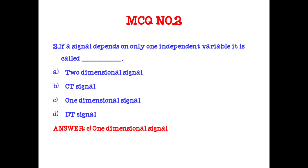More than three independent variables gives a multi-dimensional signal. Examples of such signals include music, speech, and heartbeat.